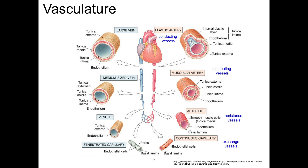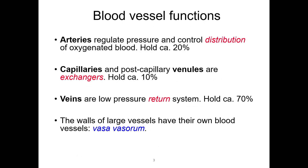Capillaries function as exchange vessels, while veins are conduits for transport of blood from the tissues back to the heart. To review: arteries regulate pressure and control distribution; capillaries and post-capillary venules are exchangers, and these vessels only hold about 5–10% of the blood at any given time, but the veins hold nearly 70%. Similar to the heart, the walls of large vessels need their own blood supply, and this happens through the vasa vasorum.